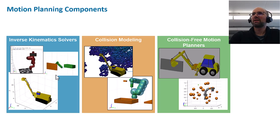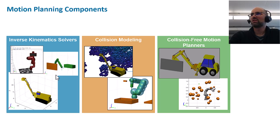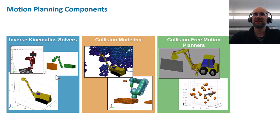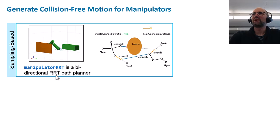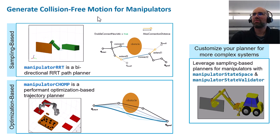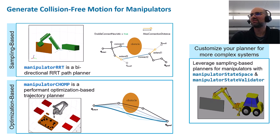For motion planning there are a few main concepts: inverse kinematic solvers, collision modeling, and collision-free motion planners — and in MATLAB there are tools for all of these. The heavy lifting is done by the collision-free motion planners. There are two main approaches: sampling-based planners, such as 'manipulatorRRT', and optimization-based trajectory planners. You can also customize the planners for more complex systems by inserting your own state space and validation functions.